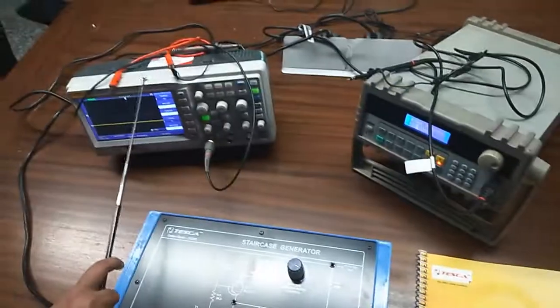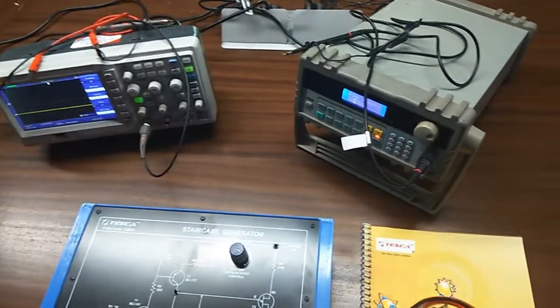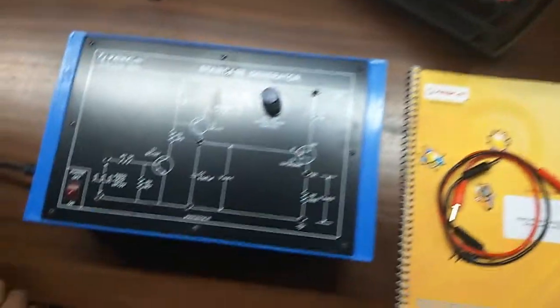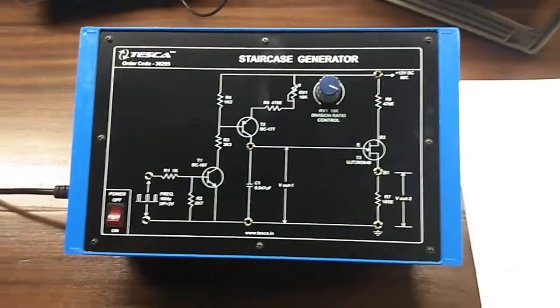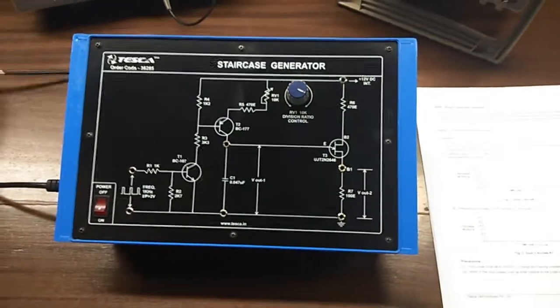To do this experiment, we will need a DSO or CRO and an audio frequency generator. Using this trainer kit, we will see the staircase waveform.